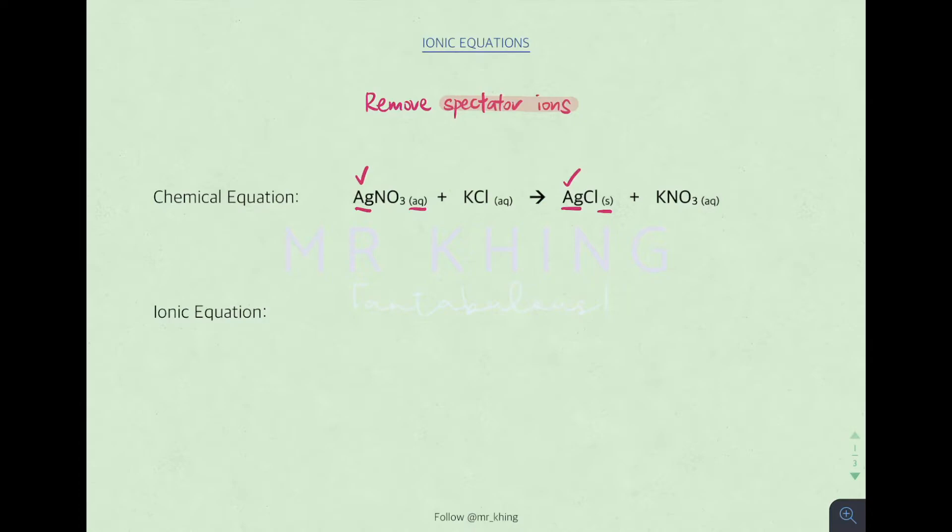Nitrate aqueous, nitrate aqueous. You see, remain the same before and after. So in this case, you know that nitrate is a spectator ion. Therefore, we do not include nitrate in our ionic equation.